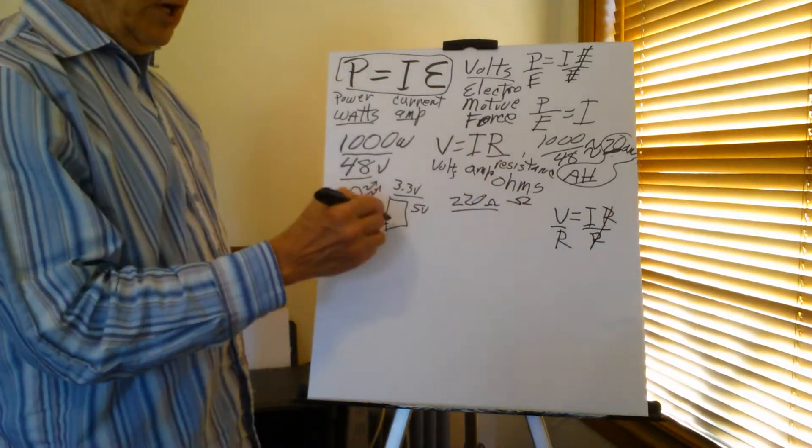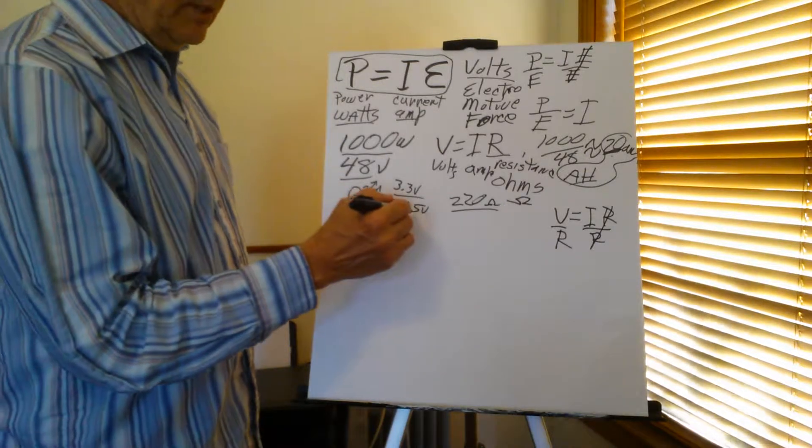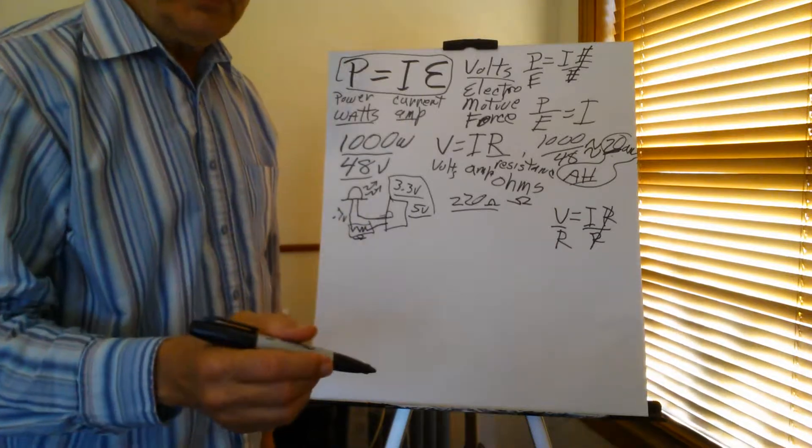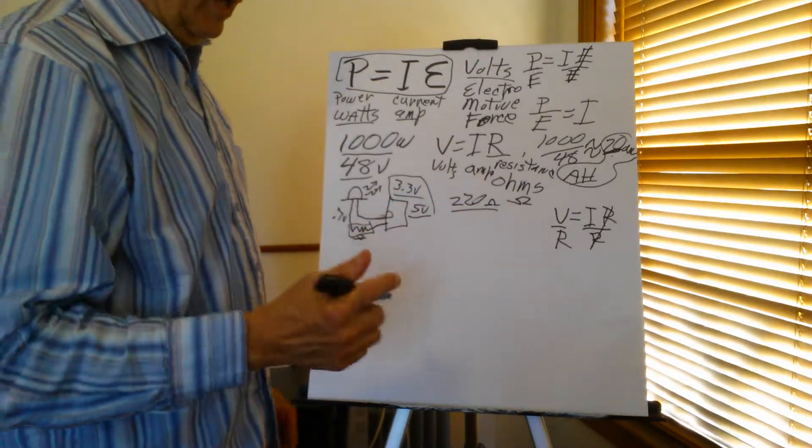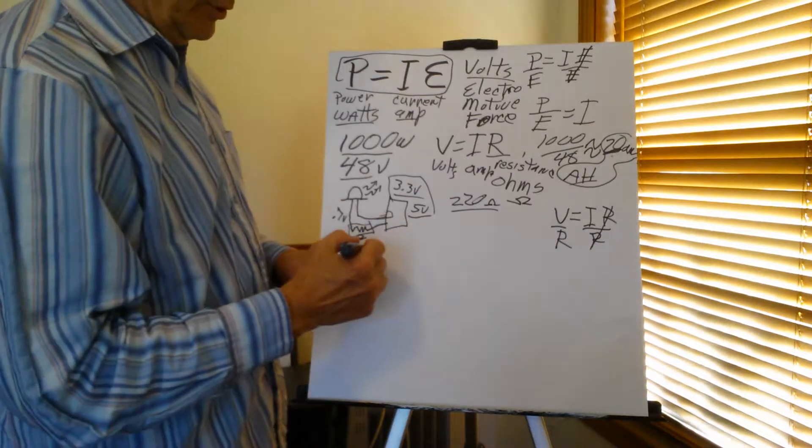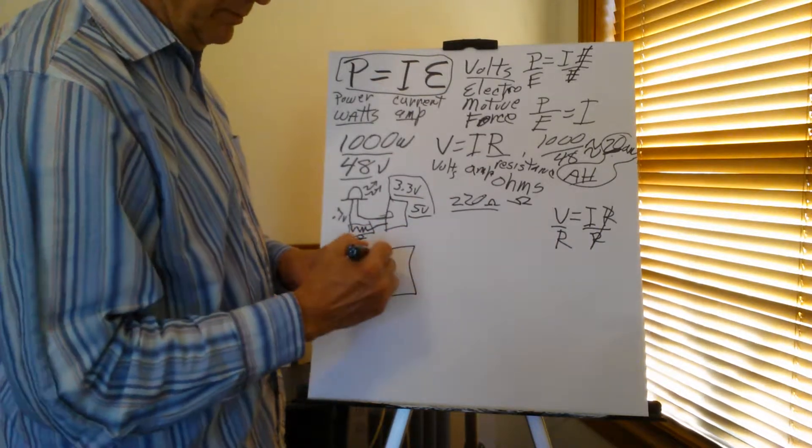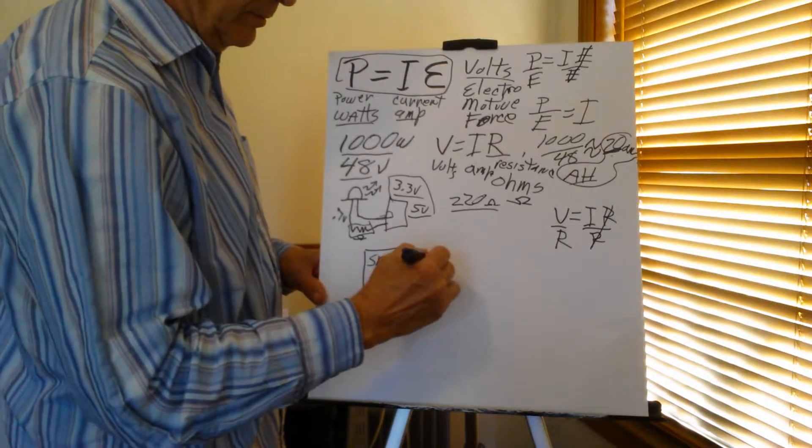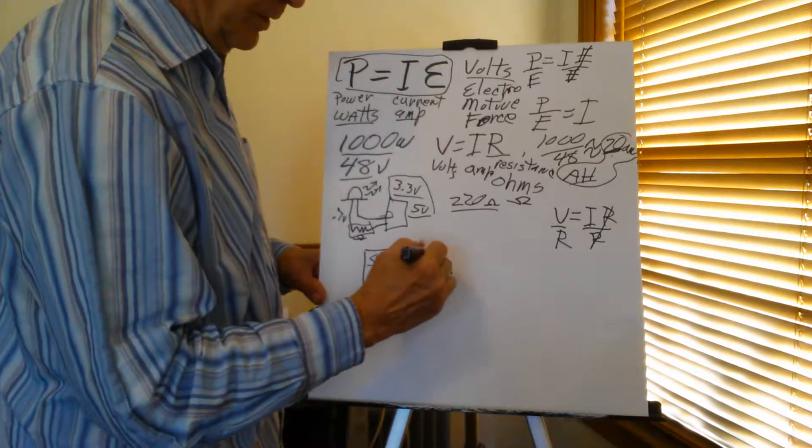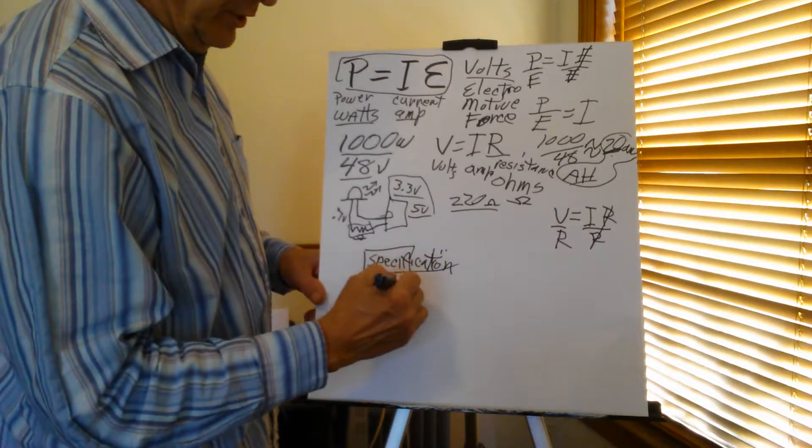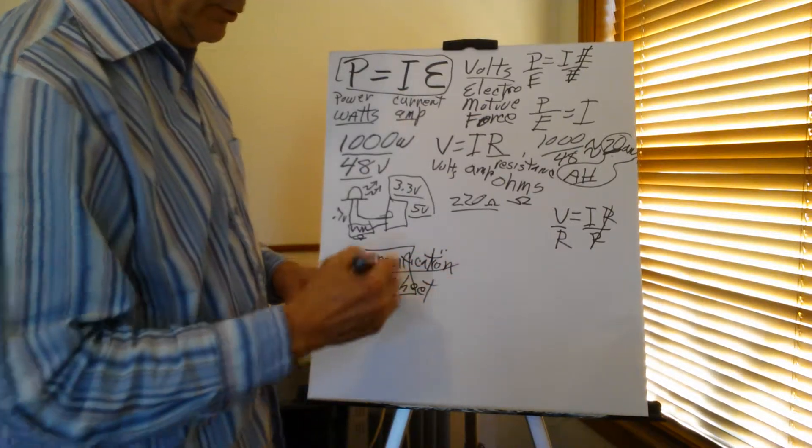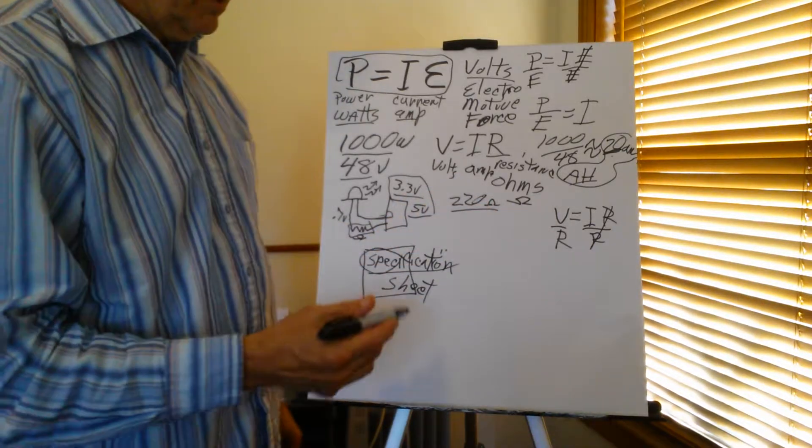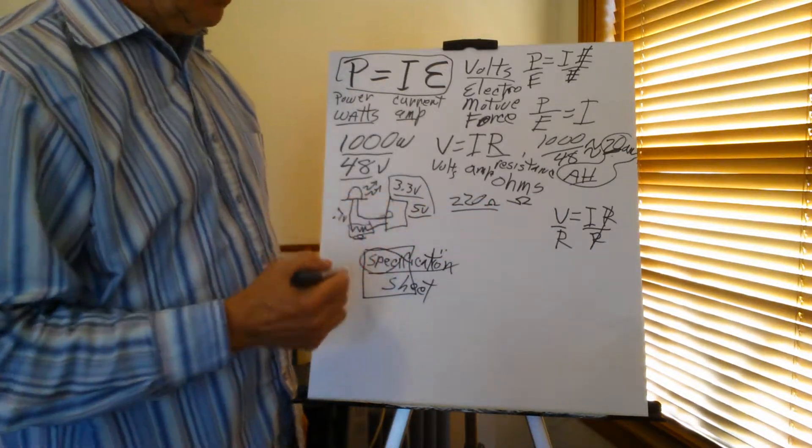How do you know how much current your little device here is going to be able to put out? There's a sheet. It's called a spec sheet. Specification sheet, or a spec sheet. And it tells you all this information. And you've got to be careful whenever you're building devices.